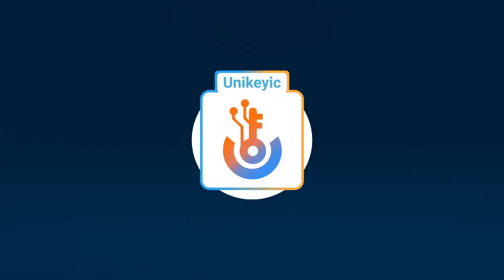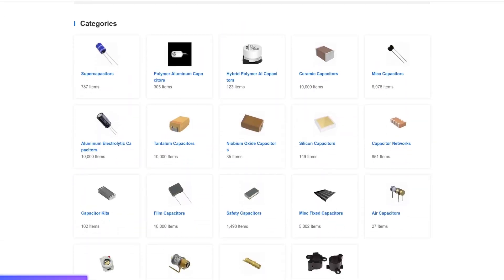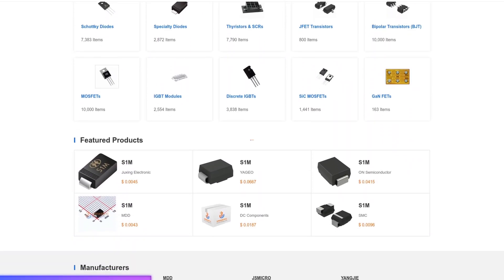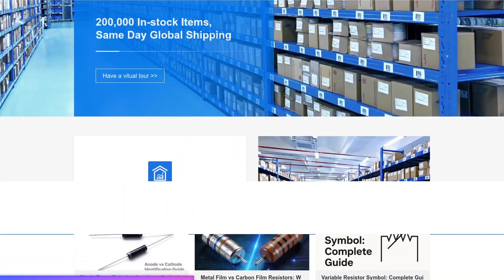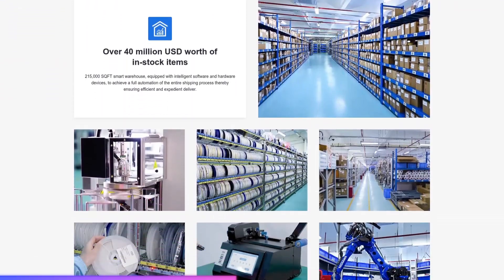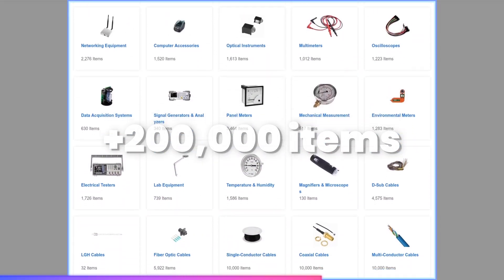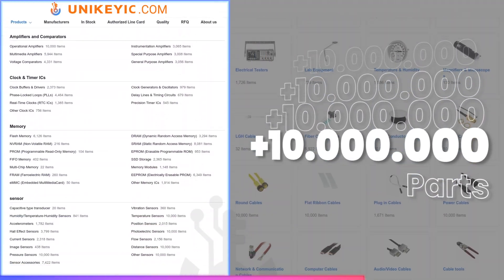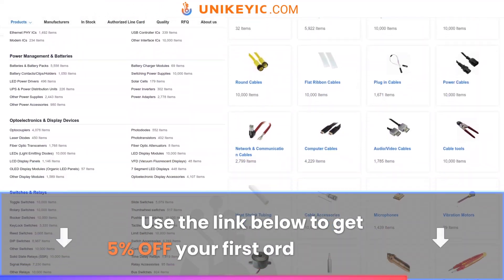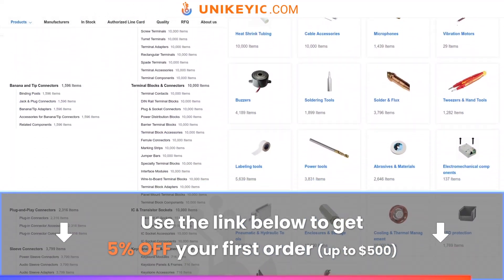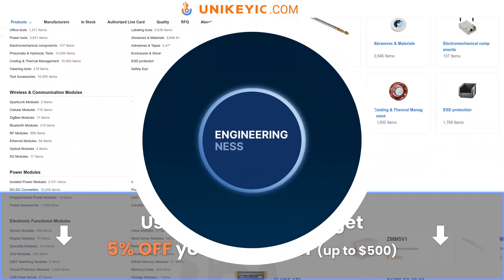Before we jump back in, a huge thank you to Unikey IC for sponsoring today's video. If you're working on electronics projects or sourcing components for your next build, check out Unikey IC, a leading distributor of high-quality electronic components with over 200,000 items in stock and more than 10 million parts available. Use the link below to get 5% off your first order, up to $500. Now, back to the video.